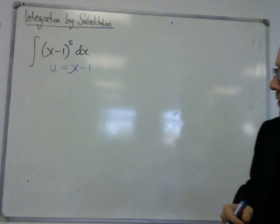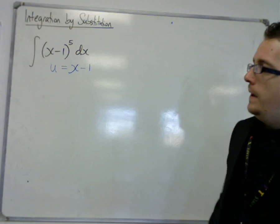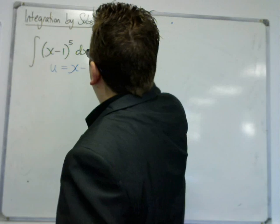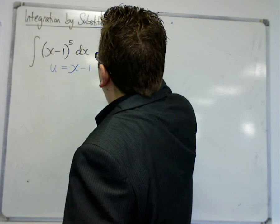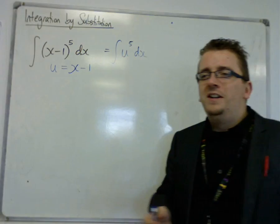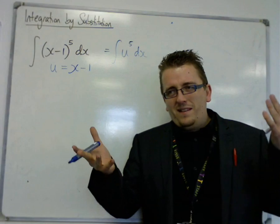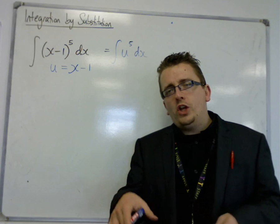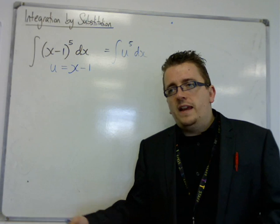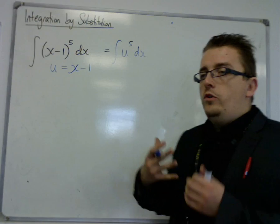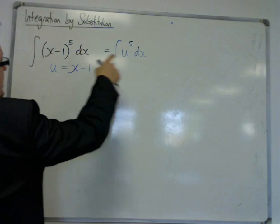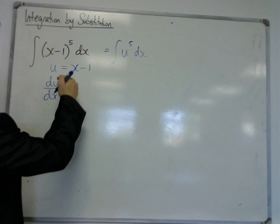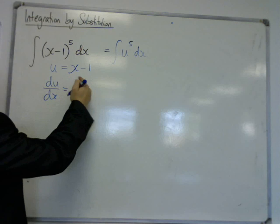Because now, if I then rewrote this, I would be integrating u^5 with respect to x. But you can't integrate u with respect to x. We've changed the variable, so we need to get it into du. Now, the way that you do this and to make this replacement of dx is to differentiate your substitution. So find du/dx, which in this case would just be 1.